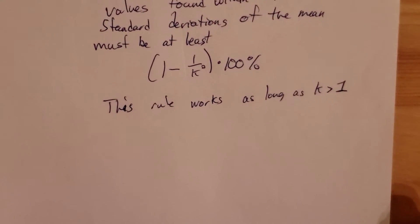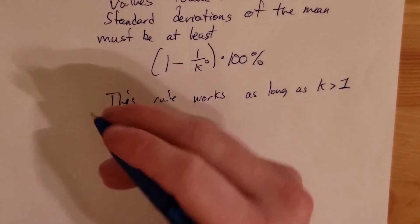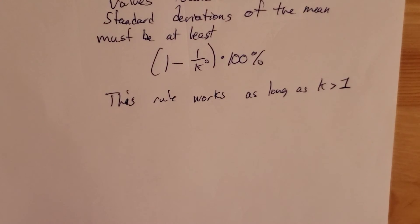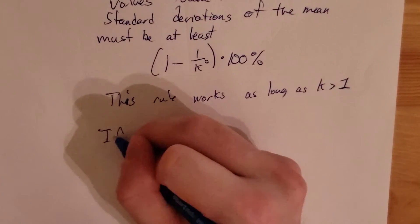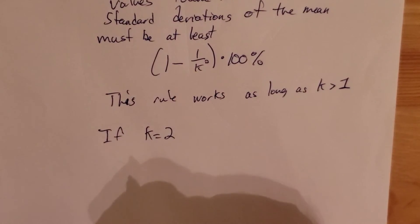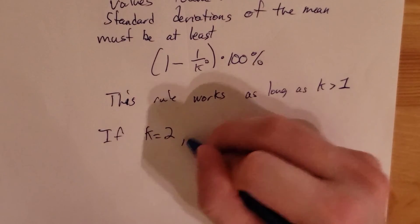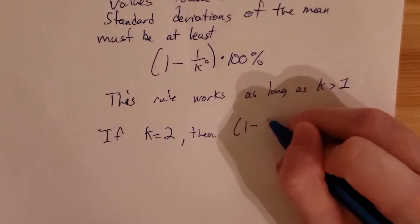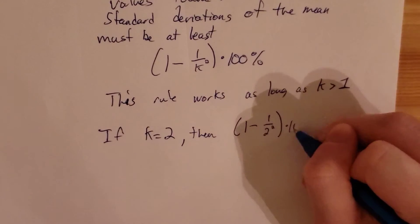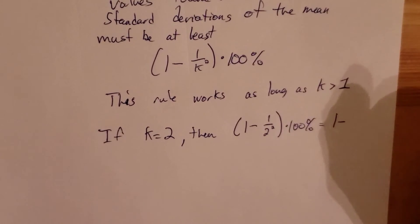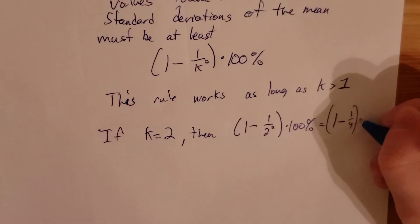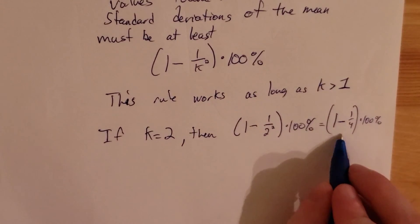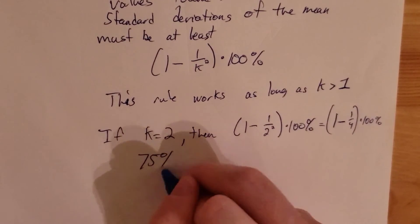So what does this actually tell us? Let's suppose we want to know, for any random data set, how much data is between the mean minus two standard deviations and the mean plus two standard deviations. If k is equal to 2 — which tells us how many standard deviations we are away from the mean — then (1 minus 1 over 2 squared) times 100 percent equals 1 minus one-fourth, times 100 percent, which is three-fourths times 100 percent, or in other words, 75 percent.